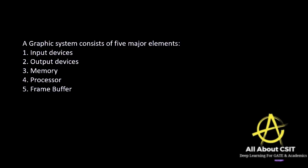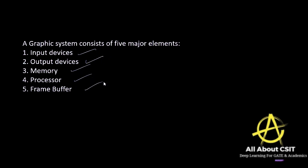A graphics system consists of five major elements: input devices, output devices, memory, processor, and the frame buffer. Everything is the same as your general purpose system that you are regularly working on.